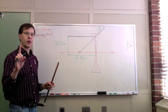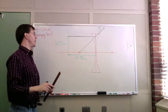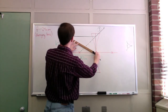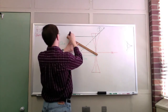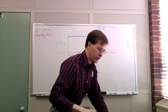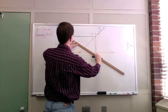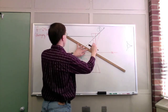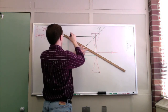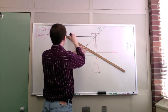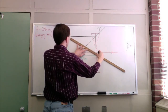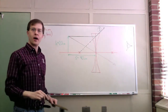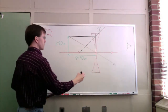That's ray one done. Principal ray number two is always the easy one. It starts at our object point and goes straight through the center of the lens — it comes out the other side and continues on forever in the same direction. That's principal ray number two.